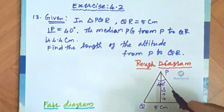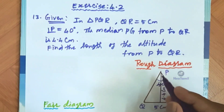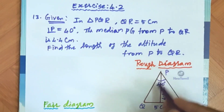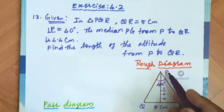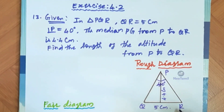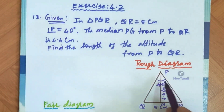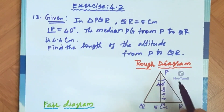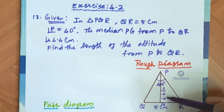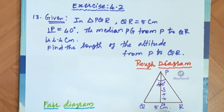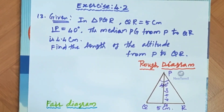This given information is taken to the rough diagram. Under the rough diagram heading, we are going to take a triangle where P is the vertex and QR is the baseline. PG is a median. Write all the values: angle P is equal to 40 degrees, PG is equal to 4.4 cm, and QR is the base of 5 cm. Using this information, we are going to construct a triangle.